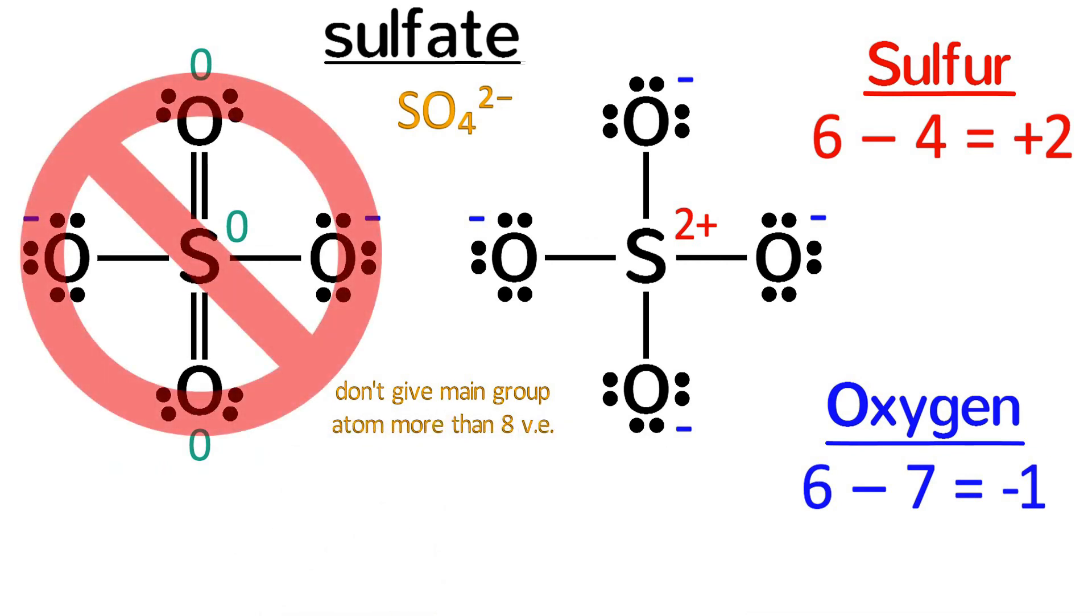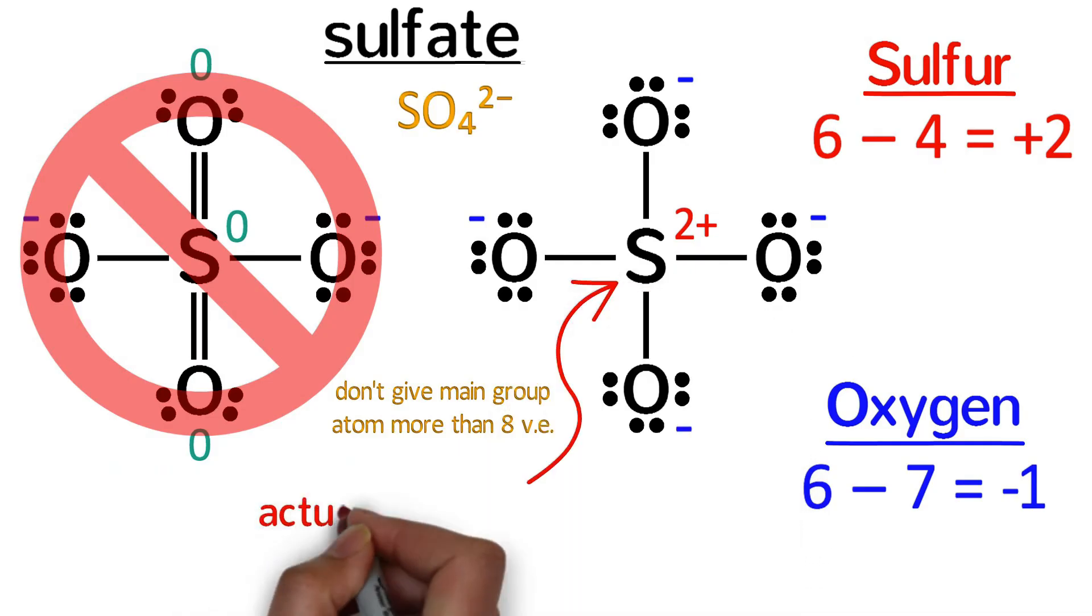which is why in this case the sulfur has an actual charge of positive 1.77. The actual charge is slightly less than two due to inductive effects.